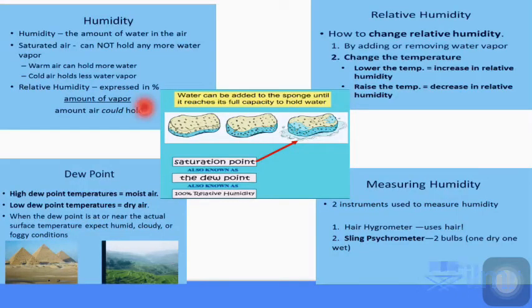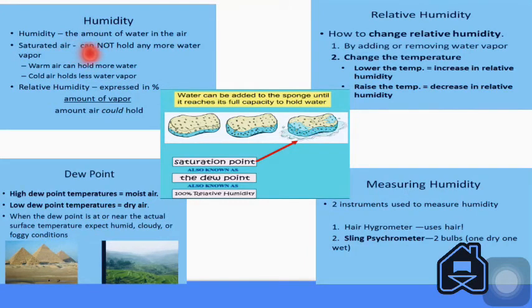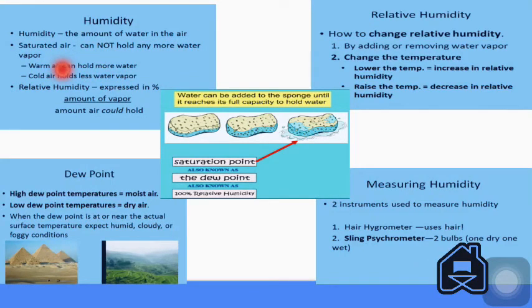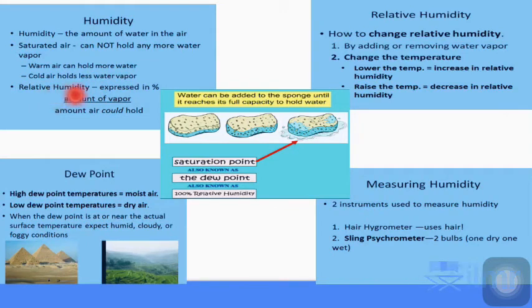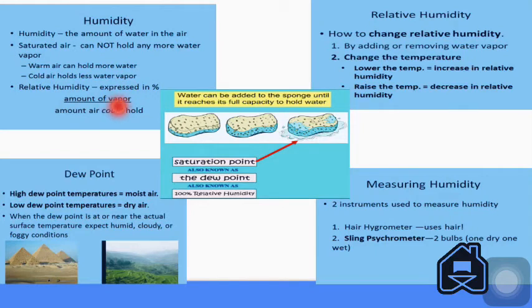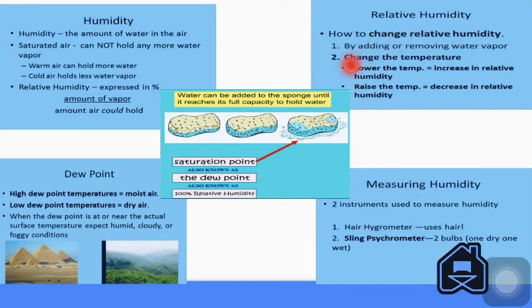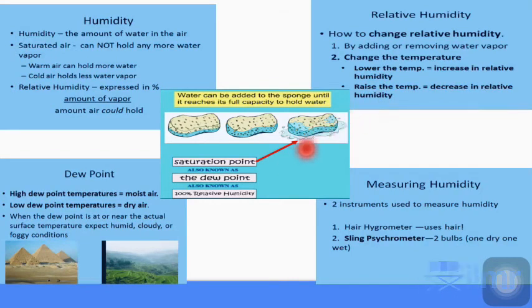Let's take a look again more closely. Humidity: the amount of water vapor in the air is called humidity. Humidity and the air reaches its saturation point when air is unable to hold any more water vapor. Warm air can hold more water vapor. Cold air holds less water vapor. Relative humidity: humidity expressed in percentage by amount of water vapor by the amount of air could hold. Relative humidity is affected by adding or removing water, or changing the temperature. Lower temperature increases relative humidity as you see in this picture.